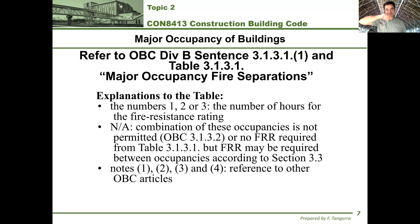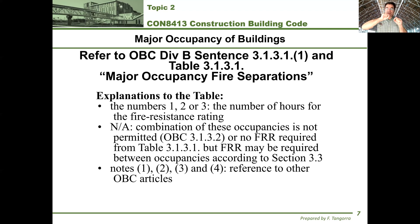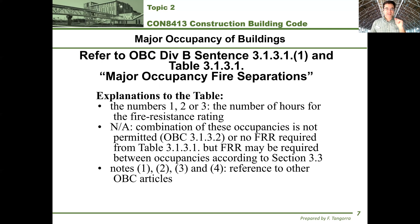NA — N slash A — refers to not applicable, meaning the two occupancies either are not allowed to be combined, or the fire rating is zero. At the bottom of this table you'll see notes 1, 2, 3, and 4. You must read those notes if there is a little exponent next to the fire rating in the table, as they reference additional requirements elsewhere in the code.